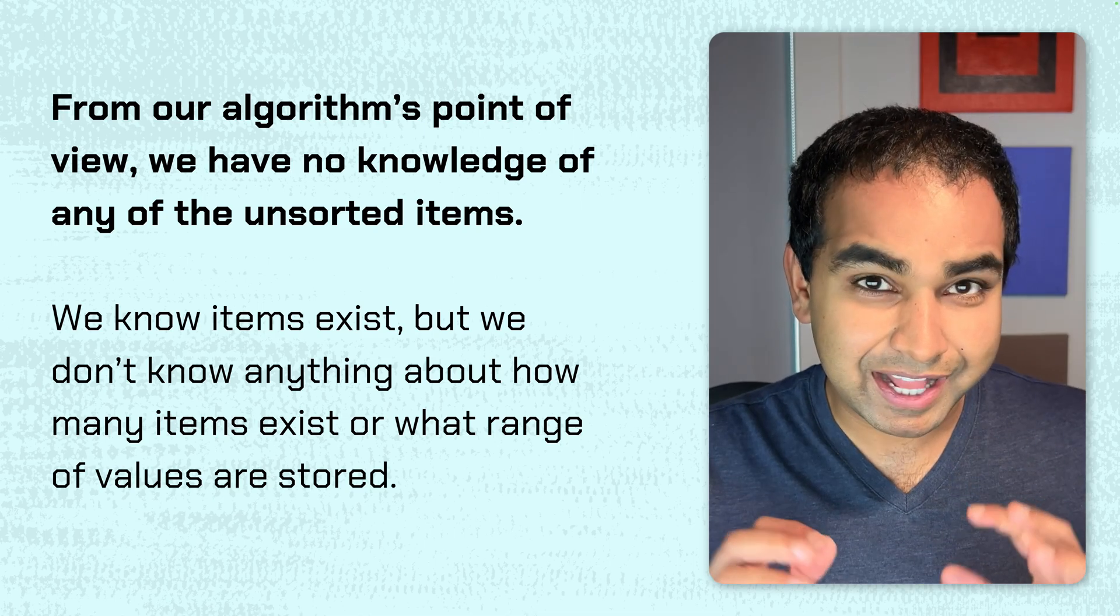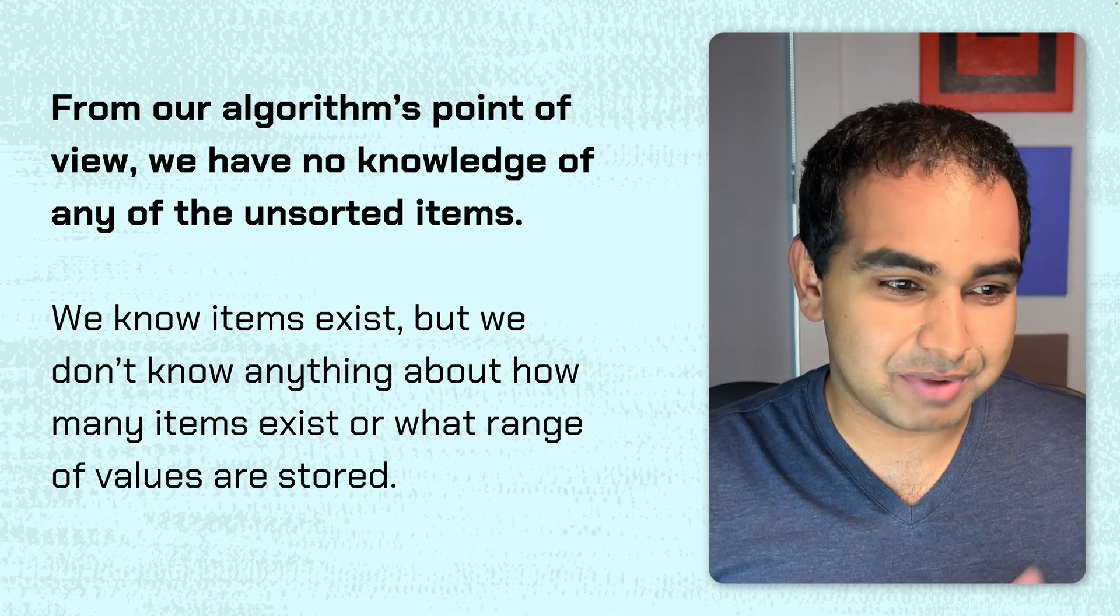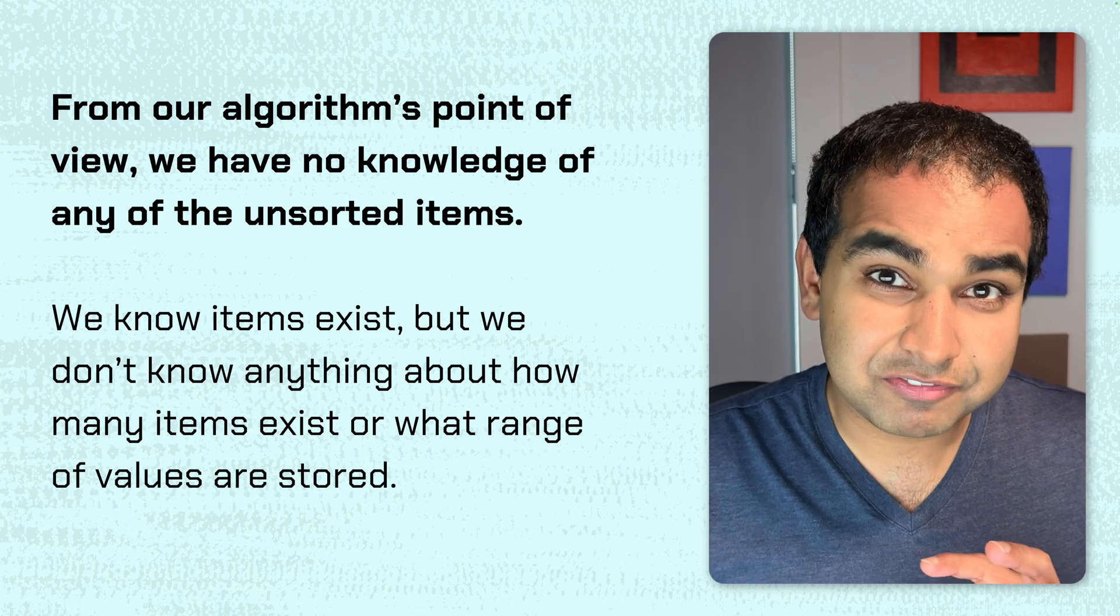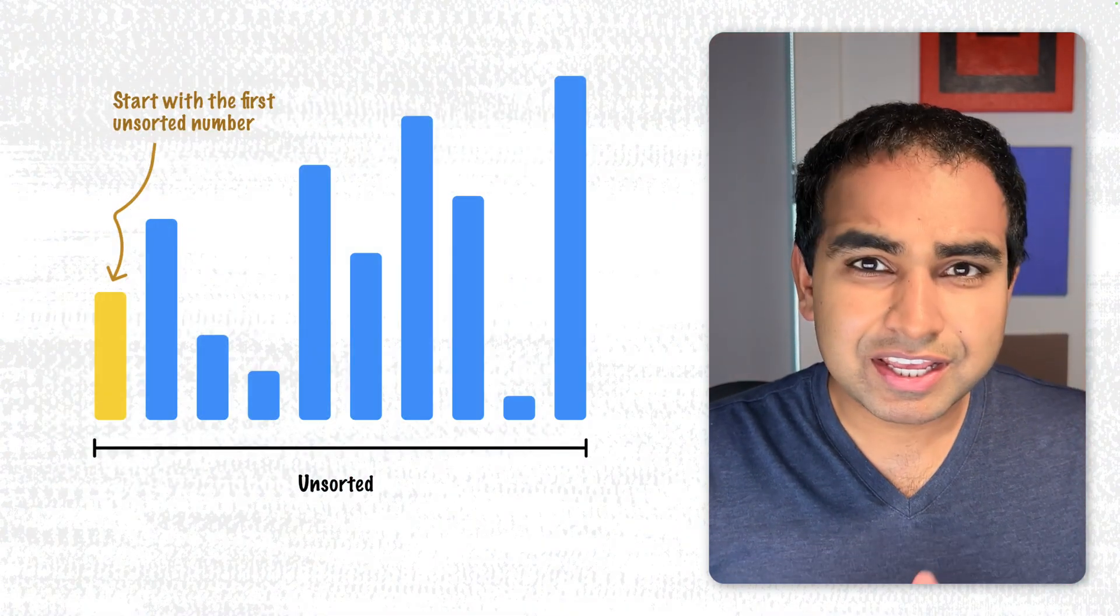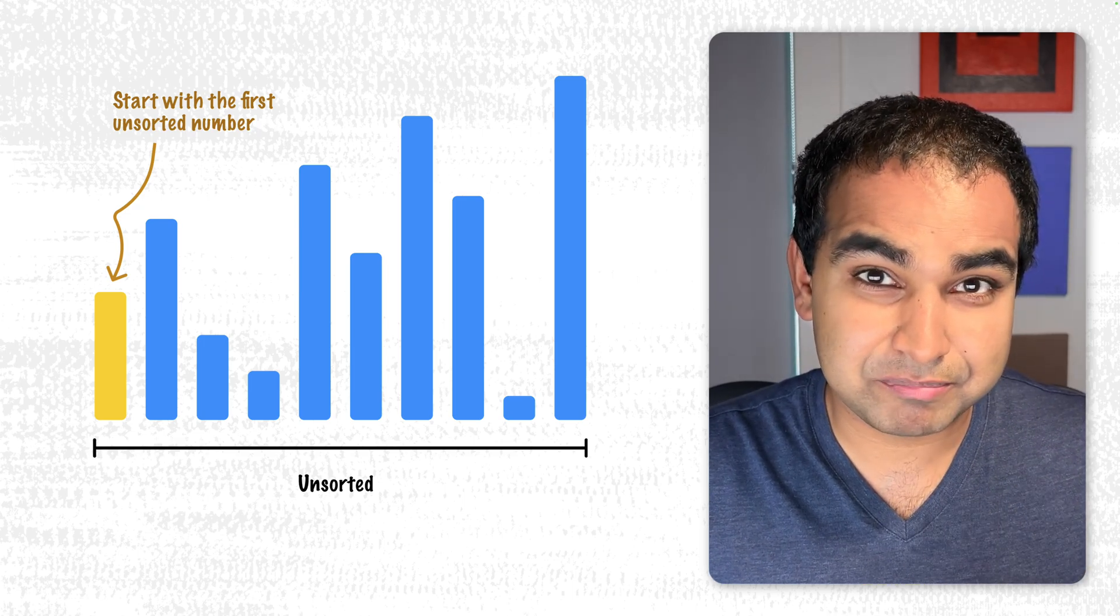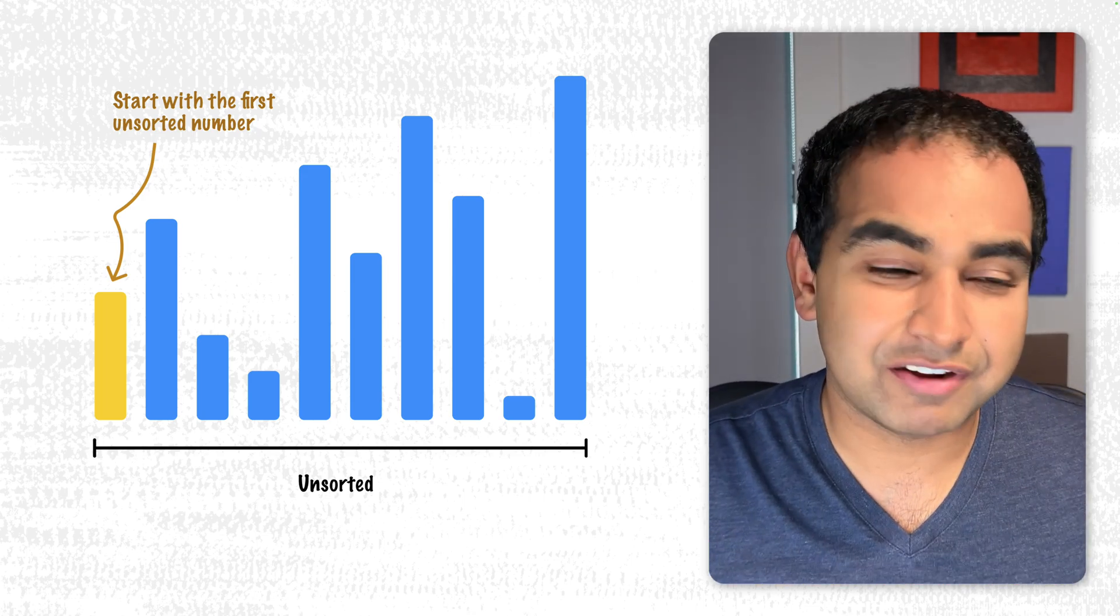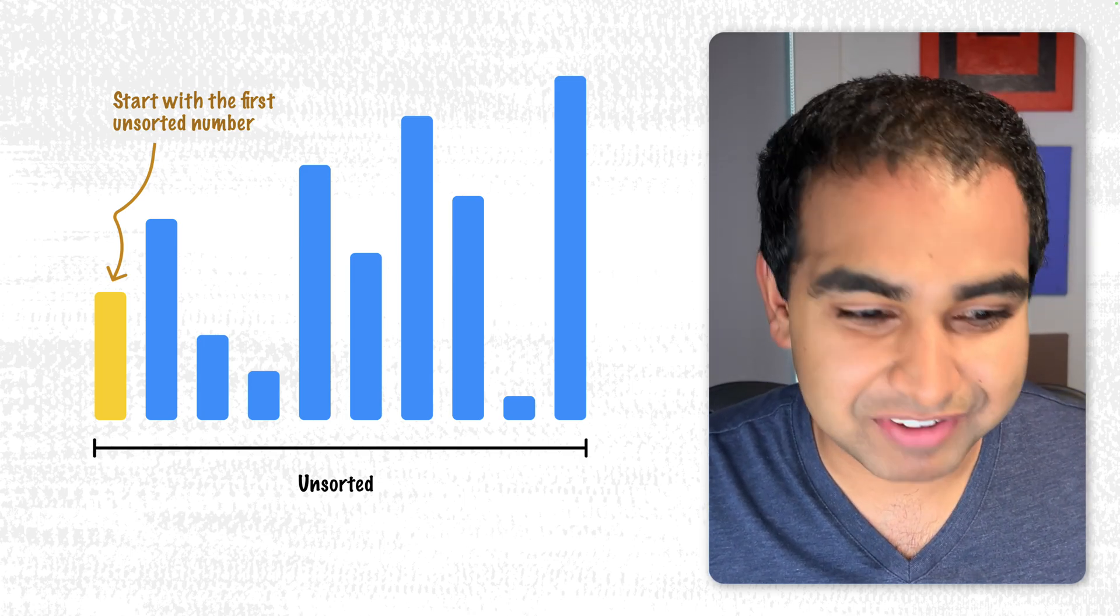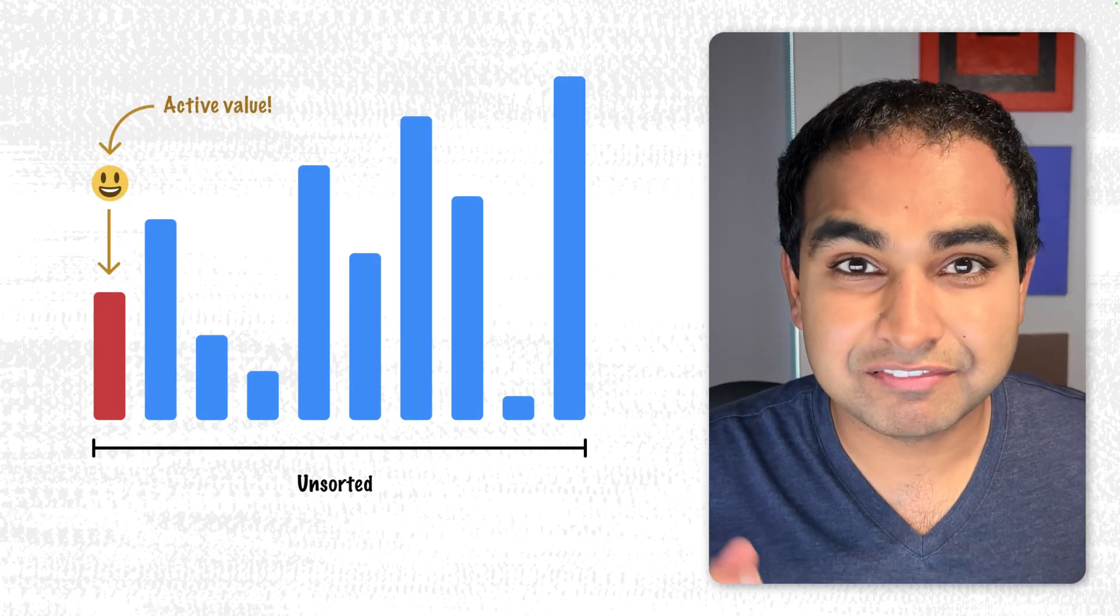At the very beginning, I'm going to say that all of these values are unsorted. From our algorithm's point of view, we have no knowledge of any of the unsorted items. All we know is that there's some items that exist, but we don't know how many they exist or what range of values will be stored because from how insertion sort works, that's not the important part. What's really important is that we start with the first unsorted number, almost like picking the first card from the top of the unsorted deck of cards, and then we start building out a sorted collection from this moment.